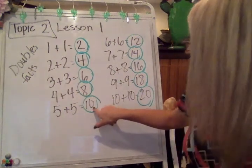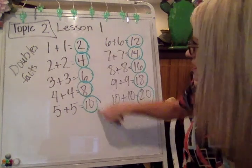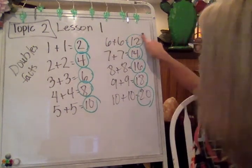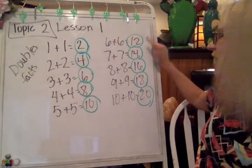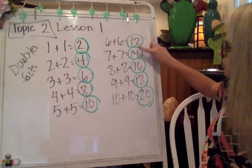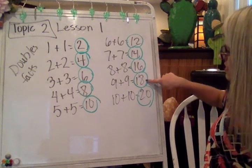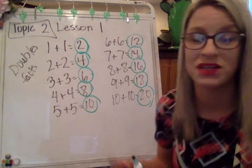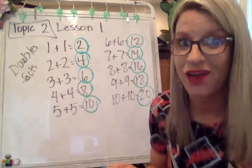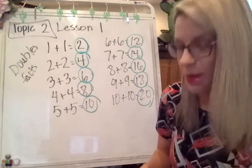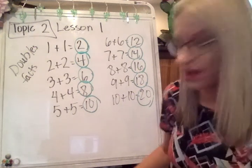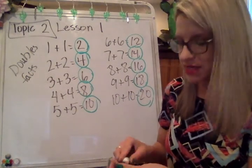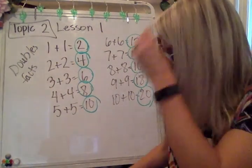It'll have the digit zero in the ones place. Same pattern over here: two, four, six, eight, and a zero in the ones place. That'll help you to know if the number is even or odd.